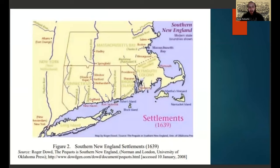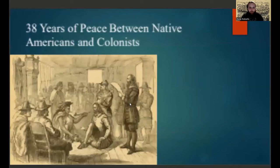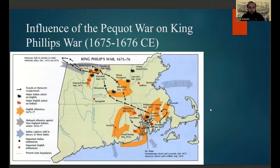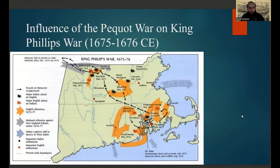Here is a map of what the tribal territory and New England settlements looked like in 1639, just two years after the Pequot War ended. This in itself would lead to a period of 38 years of peace between Native Americans and British colonists before war broke out again in King Philip's War — a conflict heavily influenced by the brutality of the British forces against the Pequot during the Pequot War.